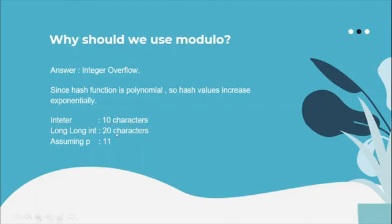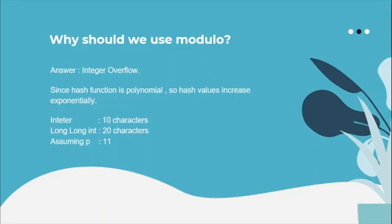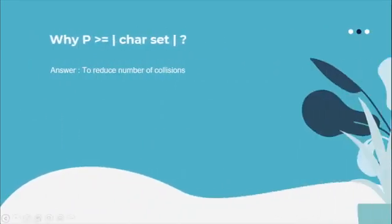So the hash value of even a 10-character string can exceed what a 32-bit integer can hold. With a 64-bit integer (long long), a 20-character string's hash would already overflow, assuming p=11. Because of this, we must use modulo. Yes, modulo introduces collisions, but without it the overflow makes the hash values inconsistent and unreliable.